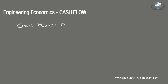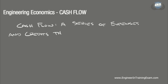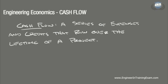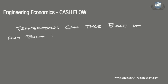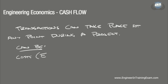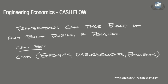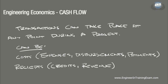Any engineering project that we encounter will be made up of a series of expenses and credits that run over the lifetime of the project's existence. These transactions are known as cash flow. Whether it is a construction project or an R&D project, monetary transactions can take place at any point during the lifetime of the project and can be anything ranging from the cost of a piece of equipment — called an expense, disbursement, payment, etc. — to a favorable return on an investment. This is called a credit or a revenue.